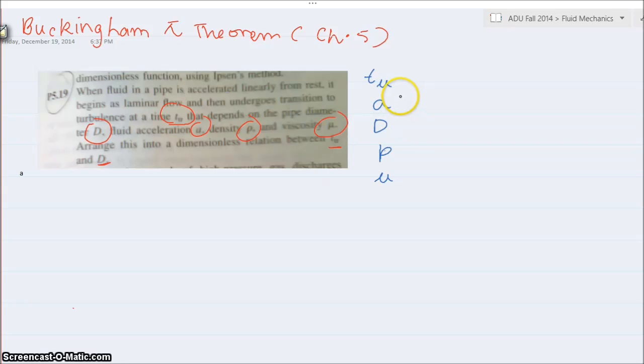So we have 5 quantities and they want us to arrange them into a dimensionless relationship between T_u and D. So basically what I want is that I want this relationship to be connected with diameter. I would like to know what is the relationship between the turbulence time, the time that takes the flow to go from laminar to turbulence, and the relationship between that and the pipe diameter.